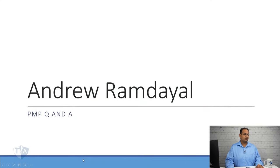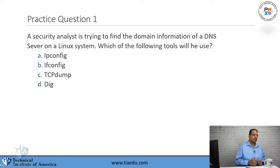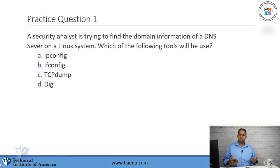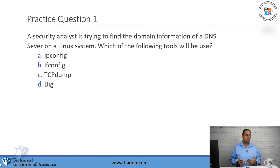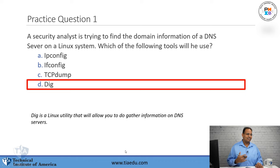A lot of these questions are going to have some commands in there, so if you haven't got to your command practicing section of your study, make sure that you check it out. Practice question one: When a security analyst is trying to find the domain information of a DNS server on a Linux system, which of the following tools will he use? A, IP config. B, ifconfig. C, TCPdump. Or D, dig. You're on a Linux box — the answer here is dig.